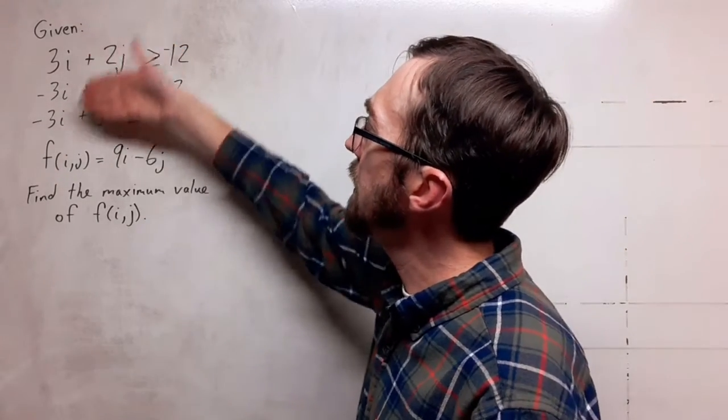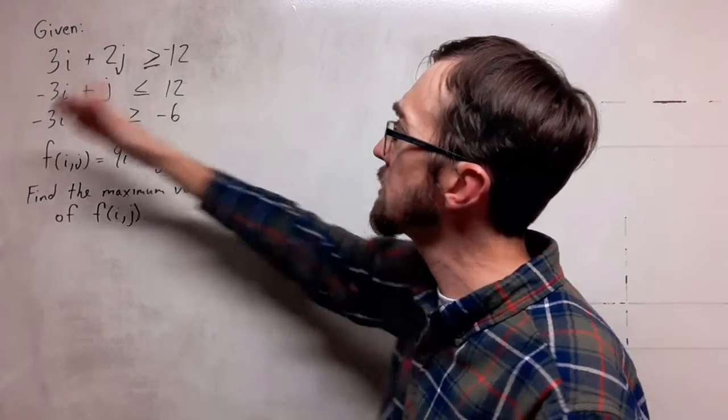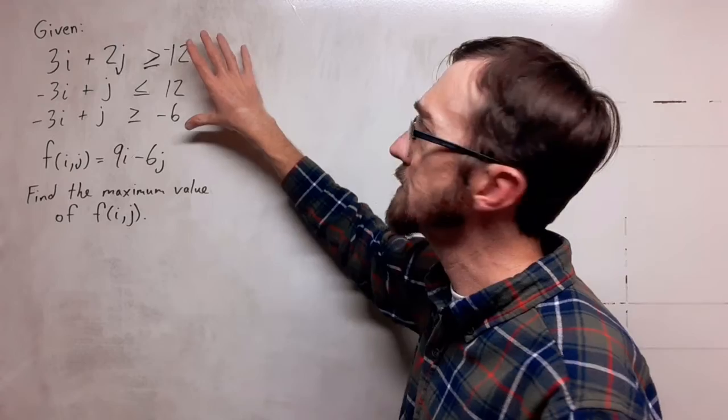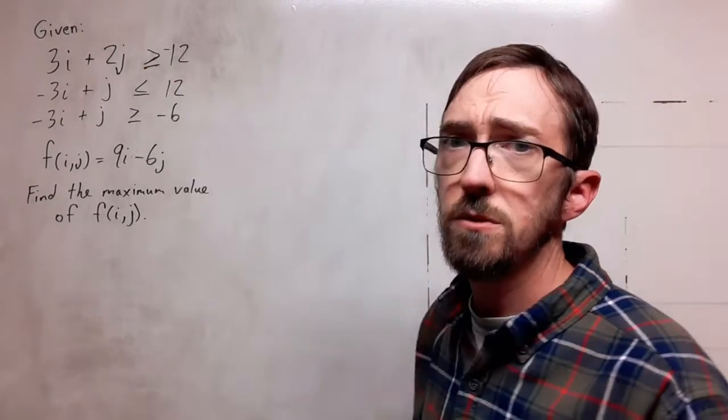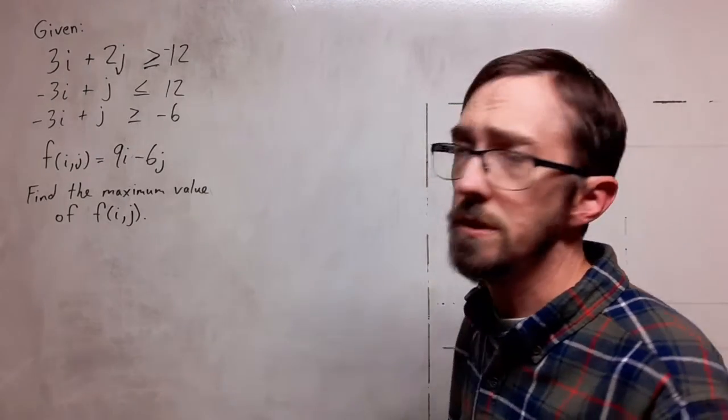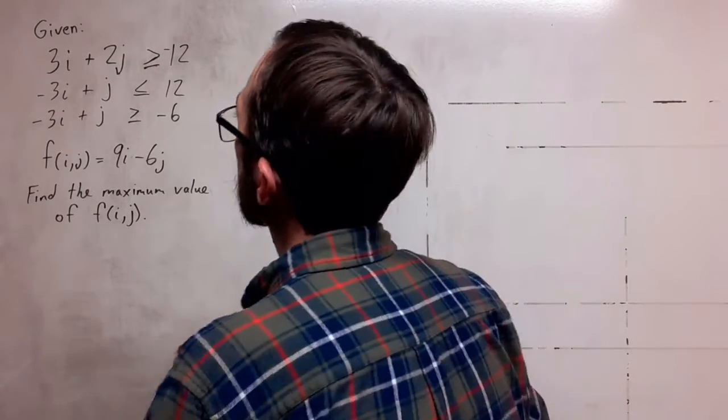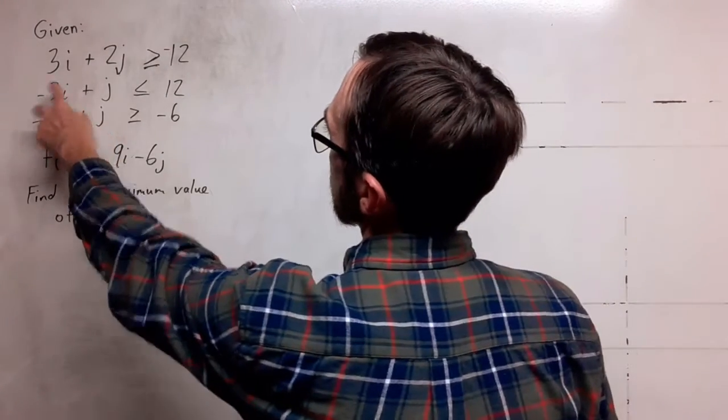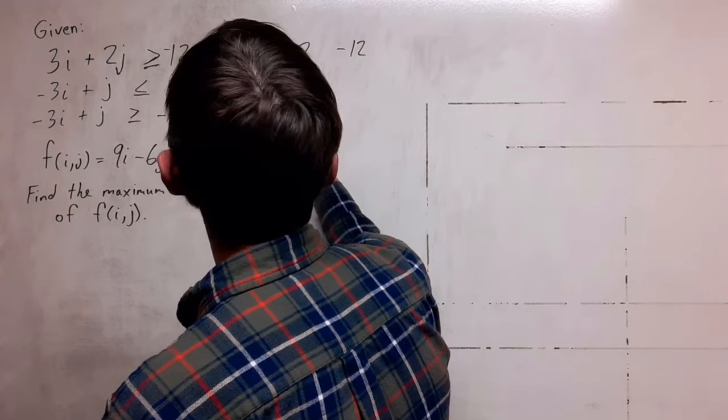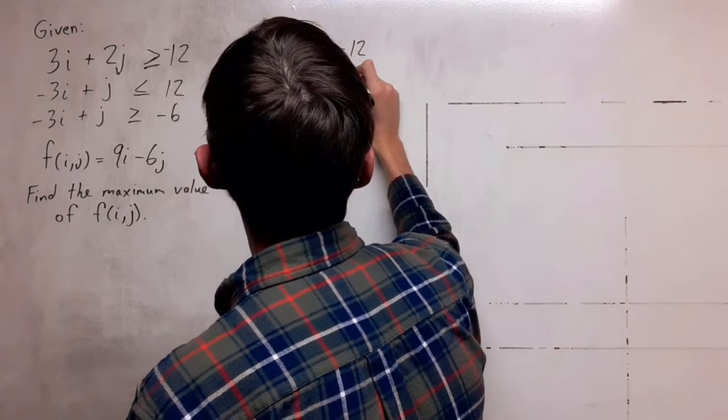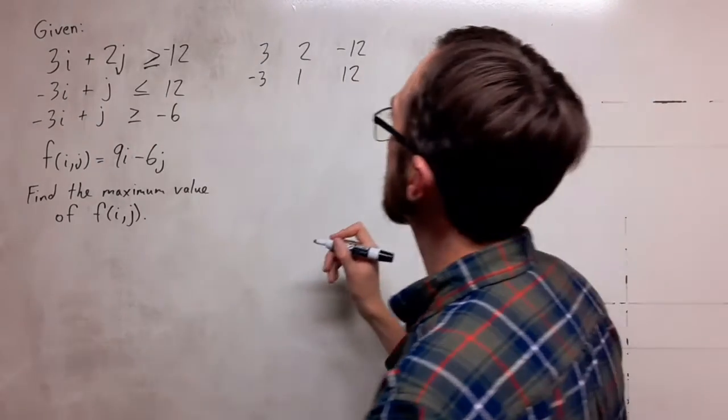I already have my i terms, my j terms, and my constant terms all in columns in standard form. So I'm just going to translate those into a matrix and do the reduced row echelon form operation. So I have 3, 2, negative 12, and then negative 3, 1, 12 will be my second row.